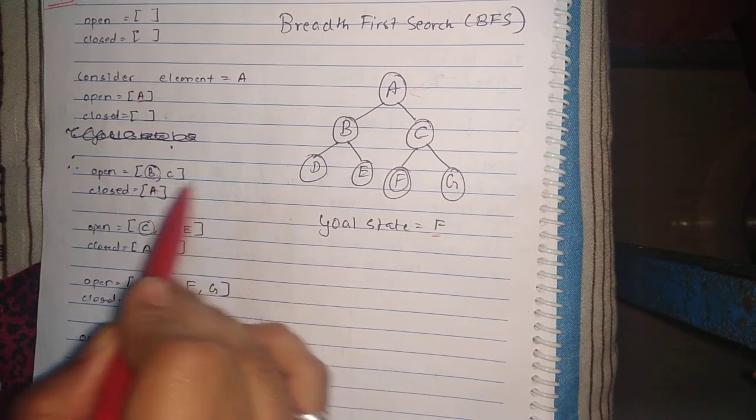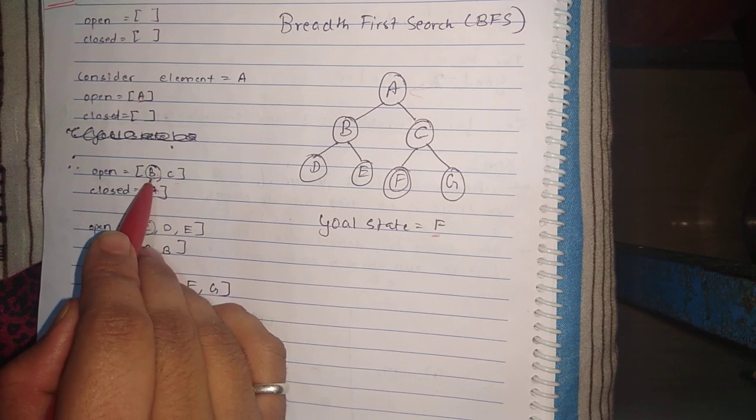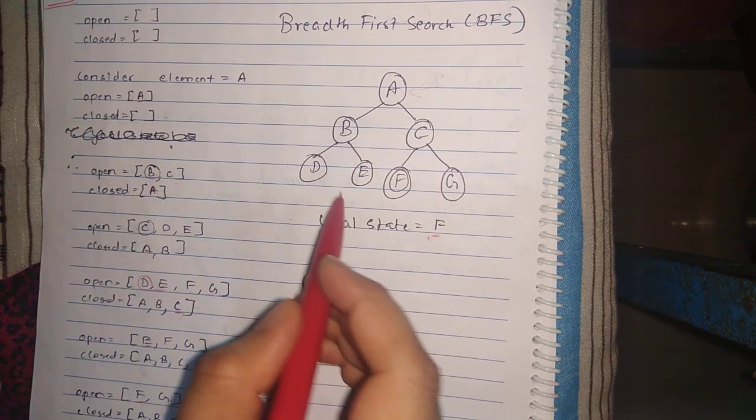We will insert B and C into the open array from back. Next element is B, so we will check whether B is a goal state or not.